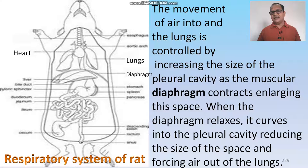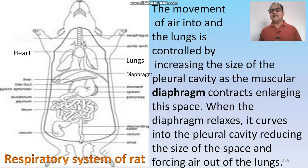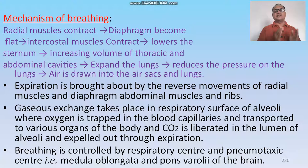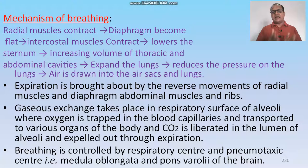Movement of air into the lungs is controlled by the increasing size of the pleural cavity as the muscular diaphragm contracts, enlarging this space. When the diaphragm relaxes, it curves into the pleural cavity, reducing the space and forcing air out of the lungs. The mechanism of breathing: radial muscles contract and the diaphragm becomes flat; intercostal muscles contract, lowering the sternum, increasing the volume of the thoracic and abdominal cavity; the lungs expand, reducing pressure, and air is drawn into the air sacs and lungs. Expiration is brought about by the reverse mechanism.